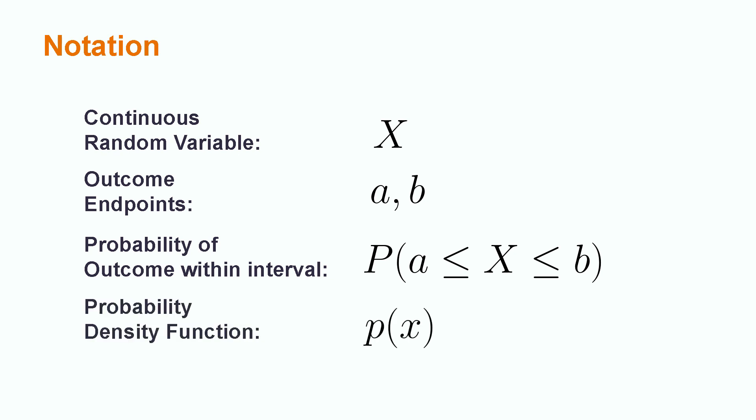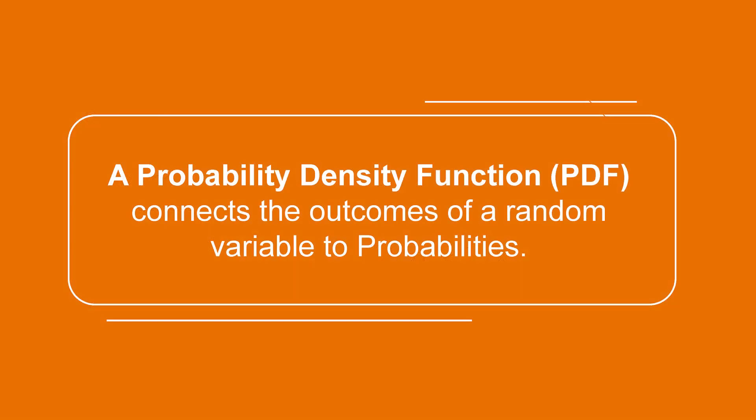When we want to define these probabilities for a continuous random variable, we will need to use a probability density function, which we generally write as lowercase p of lowercase x. In general, a probability distribution function connects the possible outcomes of a continuous random variable to probabilities between 0 and 1. There are many specific probability density functions throughout statistics, the most famous of which is likely the standard normal distribution, or bell curve.